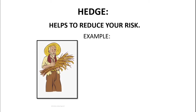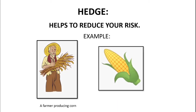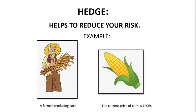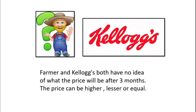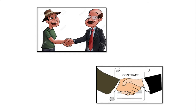Suppose there is a farmer who produces corn. The price of corn is 100 rupees at the moment, but after three months when it will be harvested, how can the farmer be assured that the price will remain 100 or fall? On the other hand, there is a company Kellogg's which requires corn. It too has no guarantee that the price will remain at 100 after three months or increase to 150. So to mitigate the risk at both ends, the farmer and Kellogg's can form a legal futures contract.